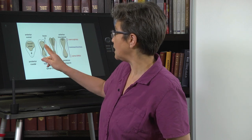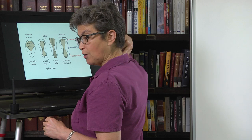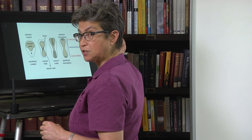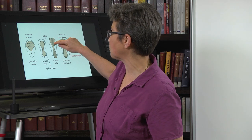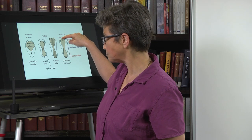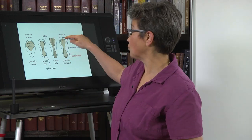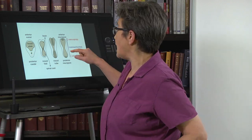Here's the neural plate. It's going to invaginate and bud and close off, but it's going to do that first at one point which is close to where the hindbrain meets the spinal cord. From that point it's going to zipper up in both directions. Later there will be another closure point farther rostrally, and things will zipper up in both directions from both starting points.